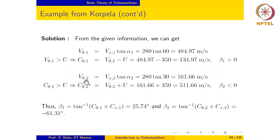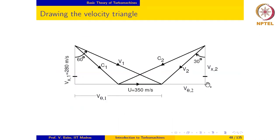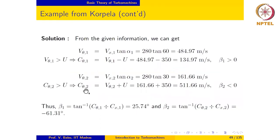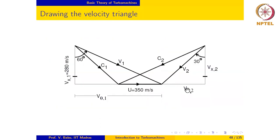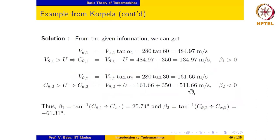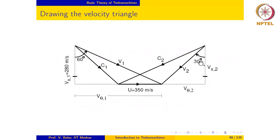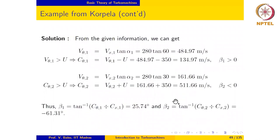In a similar manner, we evaluate Vθ2 at the outlet as Vx2 times tan(α2). Since Cθ2 is greater than U, Vθ2 is going to be Cθ2 minus U. We evaluate Cθ2 as approximately 511.66, and we note that beta2 is less than 0 since C2 is in the clockwise direction from the reference direction.